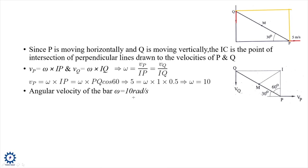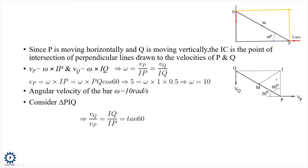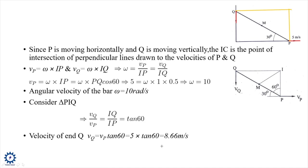From triangle PAQ, the ratio IQ/IP = tan60°. So vq/vp = IQ/IP = tan60°. Therefore vq = vp × tan60° = 5 × 1.732 = 8.66 m/s.